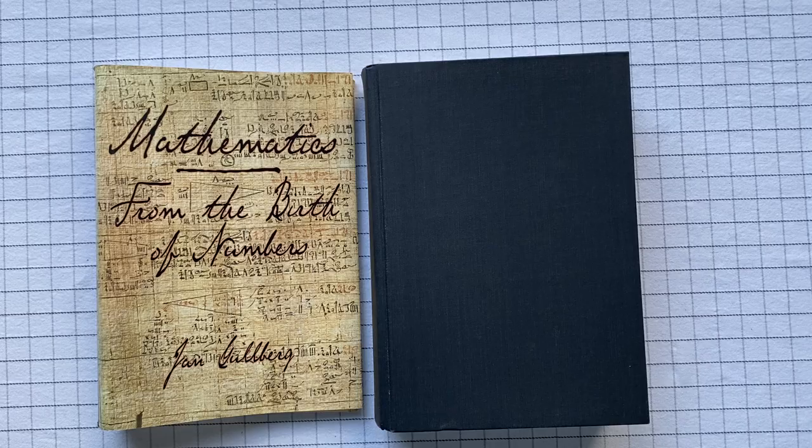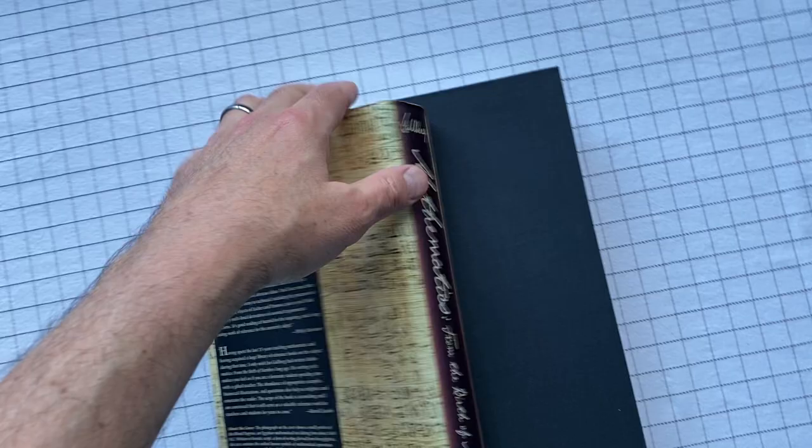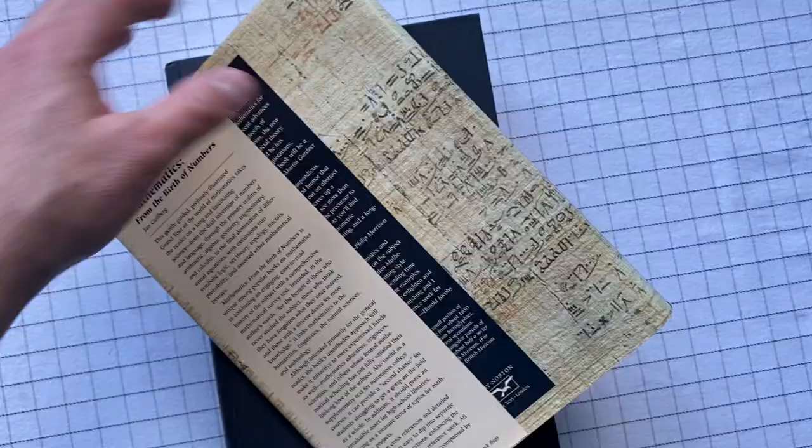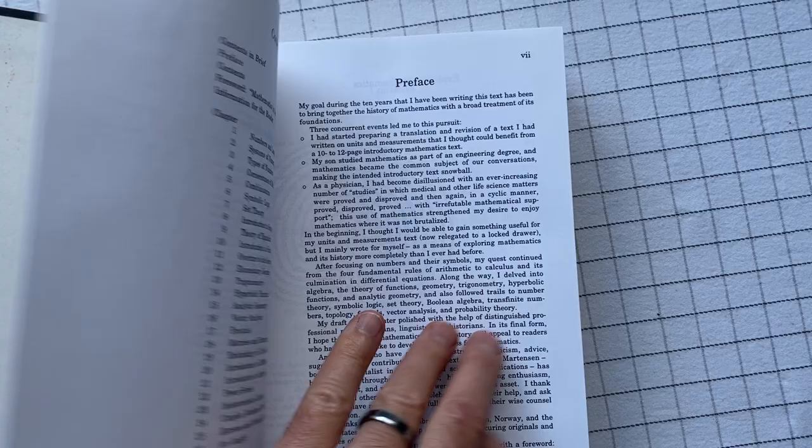Mathematics from the Birth of Numbers by Jan Gullberg. This is a hardback book with a dust jacket and it's about, well the title says it all, it's about mathematics right from the beginning.